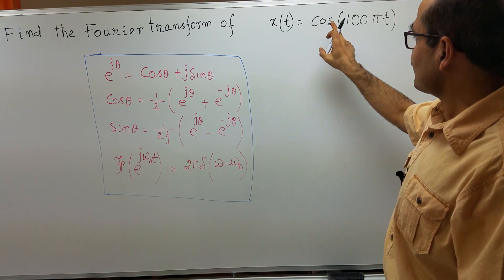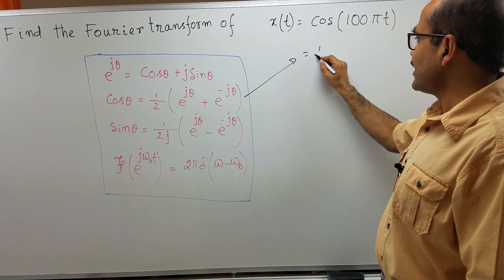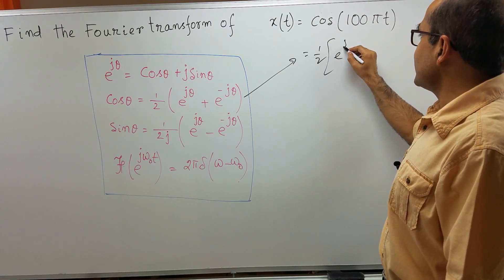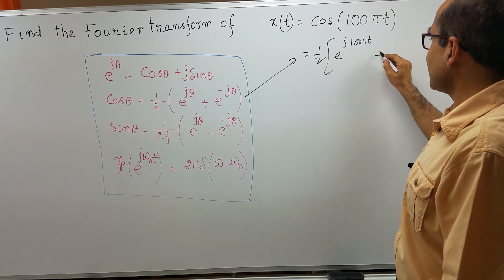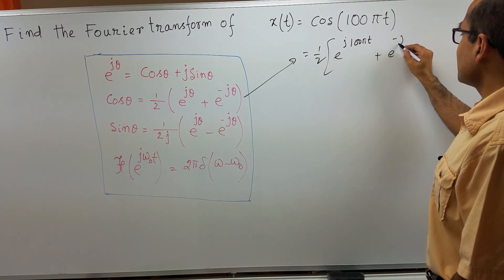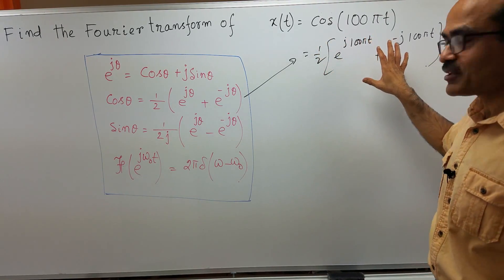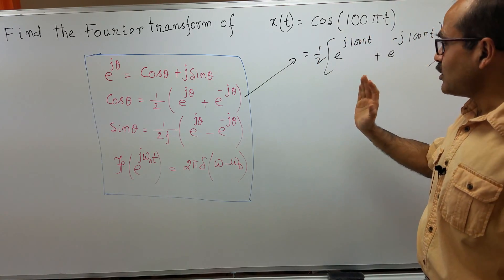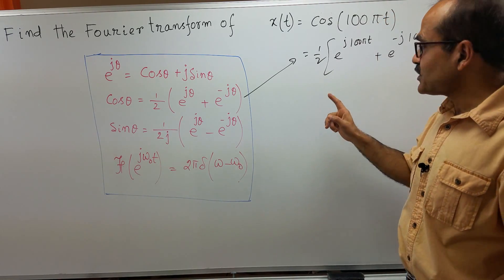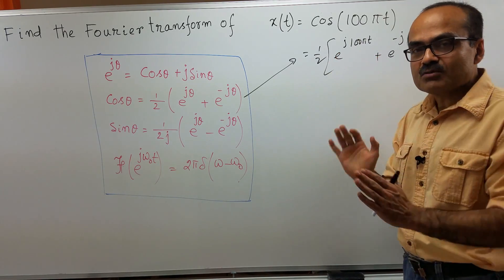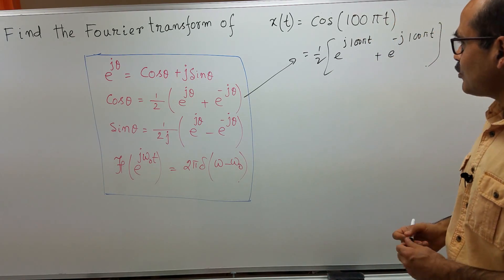I get the Fourier series expansion of cosine 100 pi t using this result. This is 1 half e to the power j — theta in this case is 100 pi t — so it is 1 half times e to the power j 100 pi t plus e to the power minus j 100 pi t. This is the Fourier series expansion with infinite terms, but only two terms of those infinite terms have nonzero coefficients: this one has 1 half, this one has 1 half. So only these two terms have nonzero coefficients.